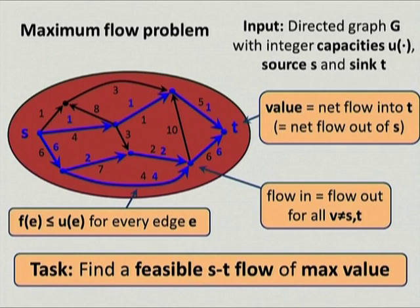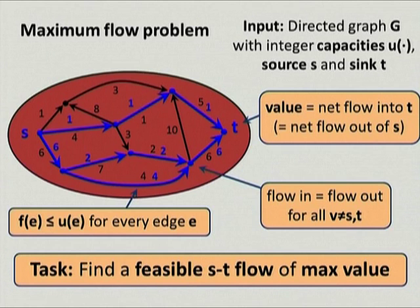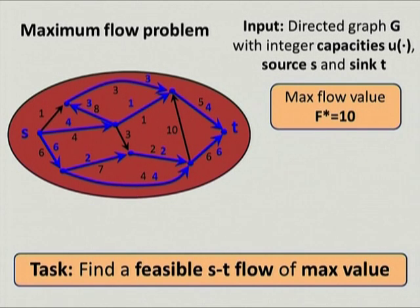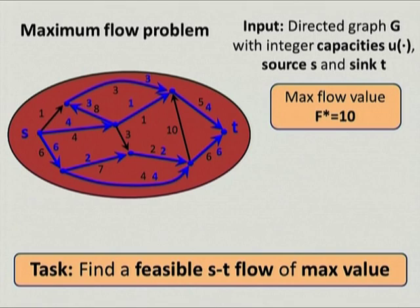Here we see that this flow has a value of 7, but the actual value of the max flow here is 10. Here is the flow that achieves this value.